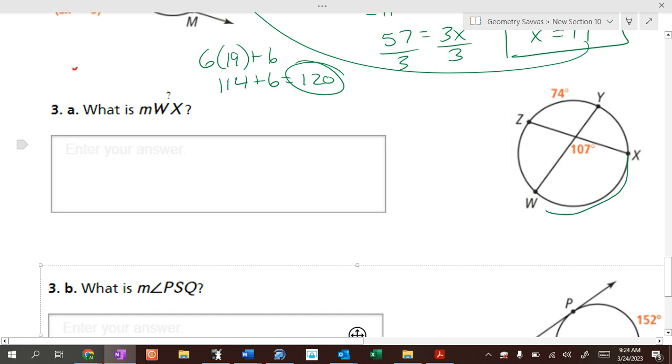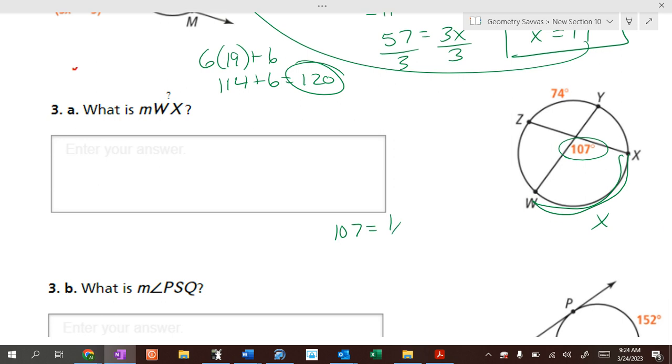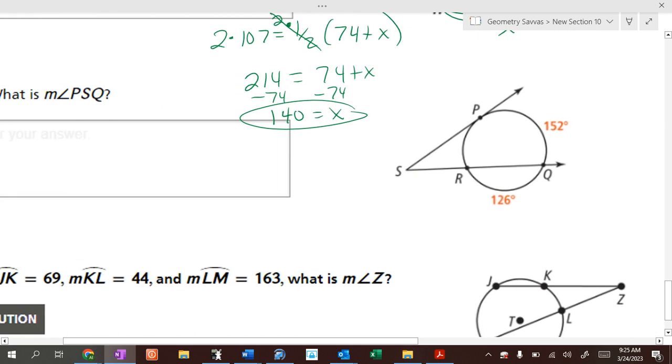What's the measure of arc WX? So let's put an x out there saying what is it. Well, the angle's on the inside, right? So 107 equals one half of 74 plus x. Again, I don't want to mess with fractions. How do we get rid of that fraction in front, Kenny Smith? Multiply by 2. So we get 214 equals, these cancel, 74 plus x, and then just subtract 74. So I get 140 equals x.